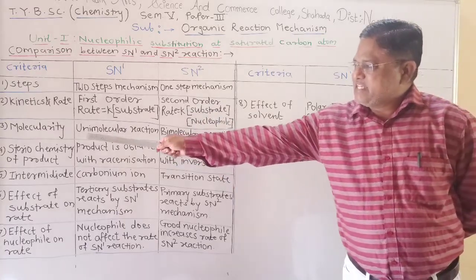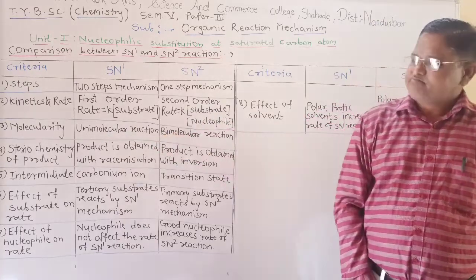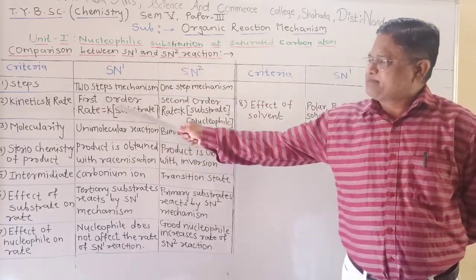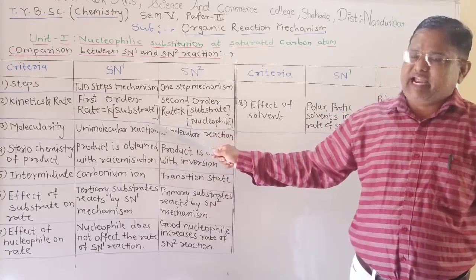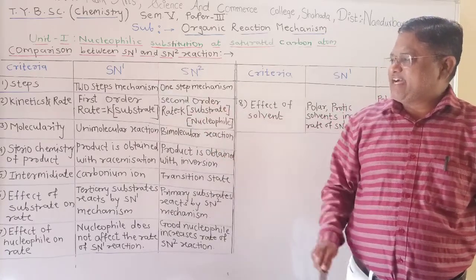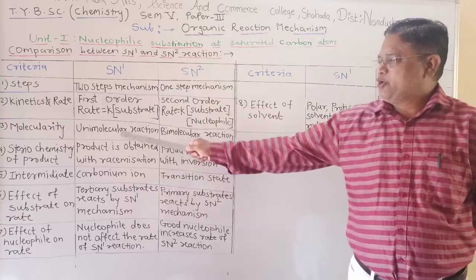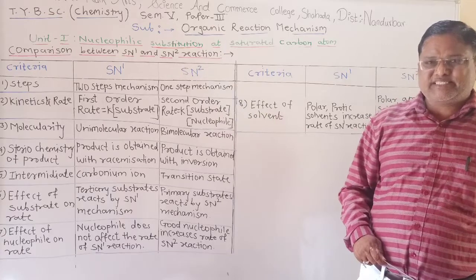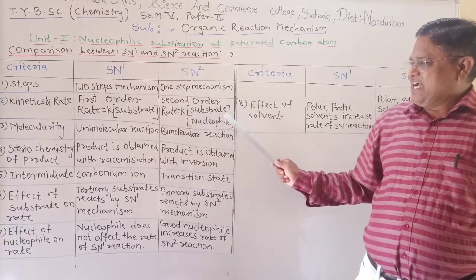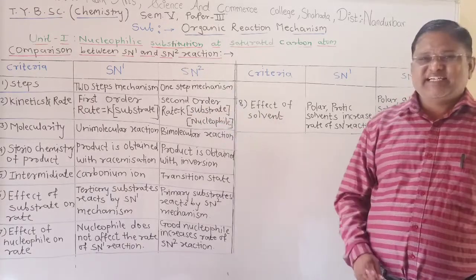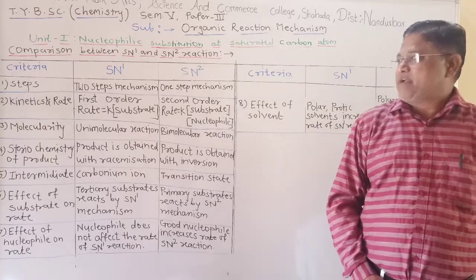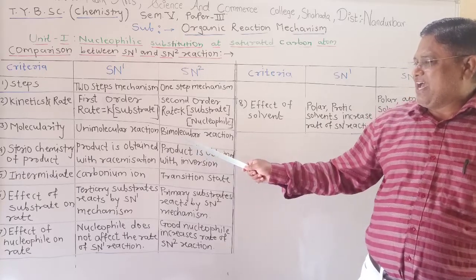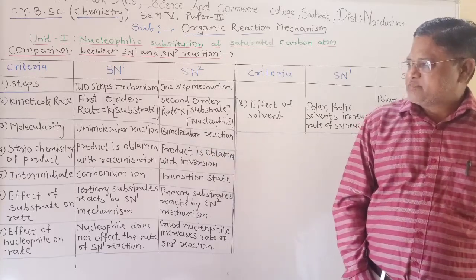The third criteria is molecularity. In SN1 reaction, only one molecule of substrate takes part in the slow step, and therefore, SN1 reaction is called a unimolecular reaction. In SN2 reaction, in the slow step, substrate as well as nucleophile — these two molecules take part in the slow step, and therefore, SN2 reaction is called a bimolecular reaction.